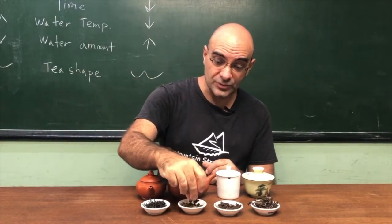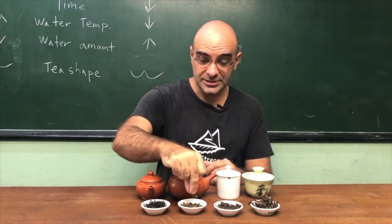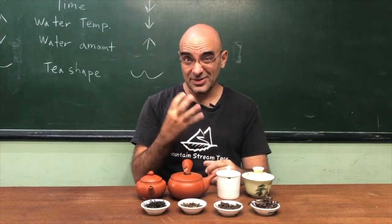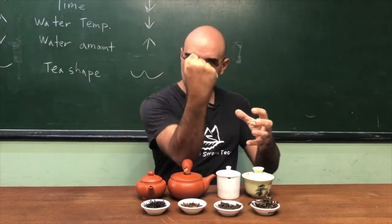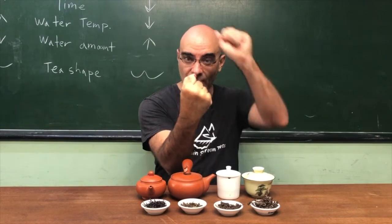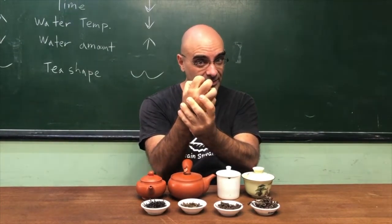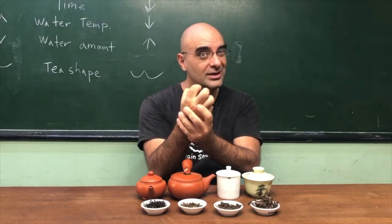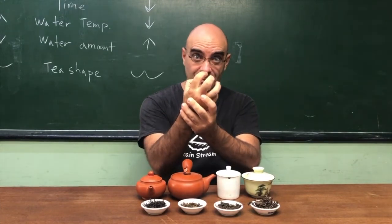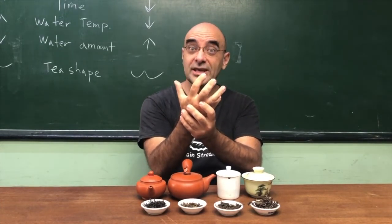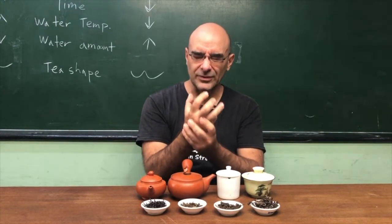If you look at the ball-rolled oolongs, which are so typical in Taiwan of the high mountain oolongs, those ones are completely different. Now think about it. You take this beautiful tea leaf, you roll it into a ball just like this, you add hot water to it, the first steep isn't going to really do much. It's going to open it up a little bit like this, but you're not really extracting a lot of flavor from it. The next steep, the second steep, it opens up a little bit more, you're going to get a little bit more flavor from it, but you're not really going to get the best flavor.